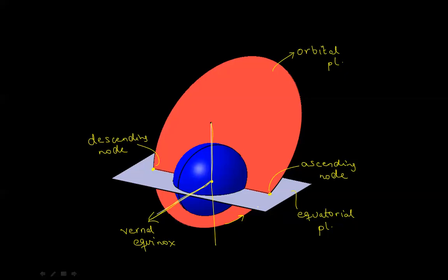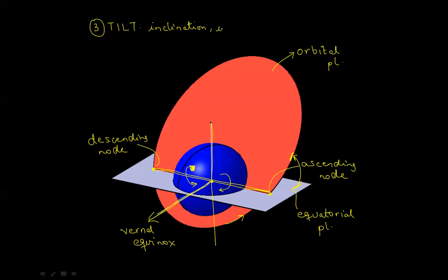If we hold the Earth, the equatorial plane, the north-south pole axis, and the line joining the two nodes steady, we can change the tilt of the orbit around that line — either way. This determines the angle between the orbital plane and the equatorial plane. That is our third parameter, which determines the tilt of the orbit. The parameter is known as inclination, denoted by the letter I, measured in degrees from the equatorial plane to the orbital plane.